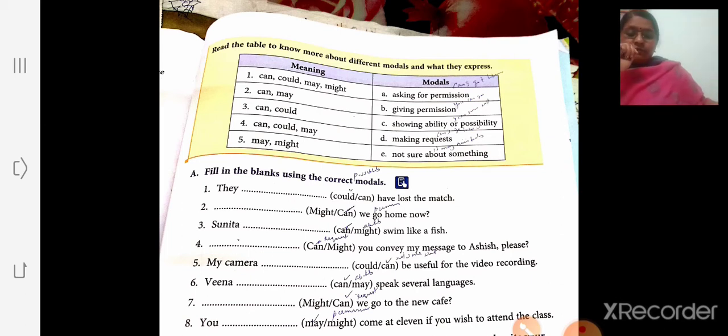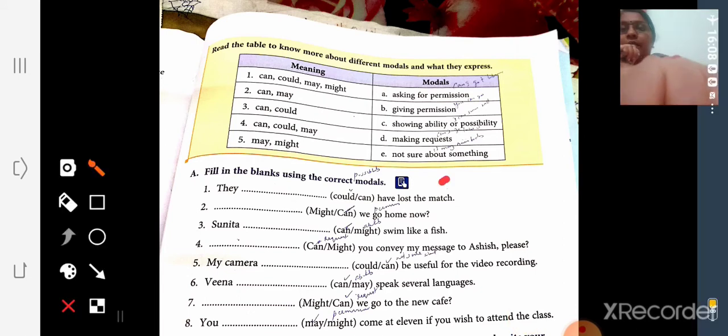Page number 95. Fill in the blanks, page number 95. They dash have lost the match, they could have. So like that, study all those modal auxiliaries. Fill in the blanks using the correct models.